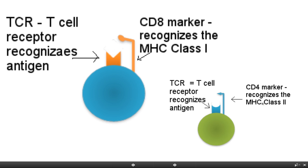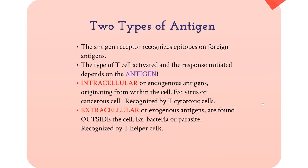Both surface markers are essential for the activation of T cells. T cells have TCRs on their surface, each recognizing a unique antigen. There are two types of antigens: intracellular and extracellular. Intracellular or endogenous antigens, such as from a virus or cancer cell, are recognized by cytotoxic T cells. T helper cells will recognize an epitope from an extracellular or exogenous antigen, such as in a typical bacterial or protozoal infection.